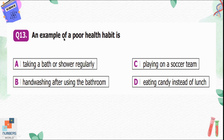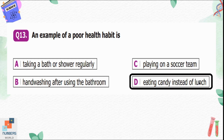Question number thirteen: an example of a poor health habit is option A, taking a bath or shower regularly; B, handwashing after using the bathroom; C, playing on a soccer team; D, eating candy instead of lunch. Option D is correct because eating junk food instead of lunch can negatively affect our health.